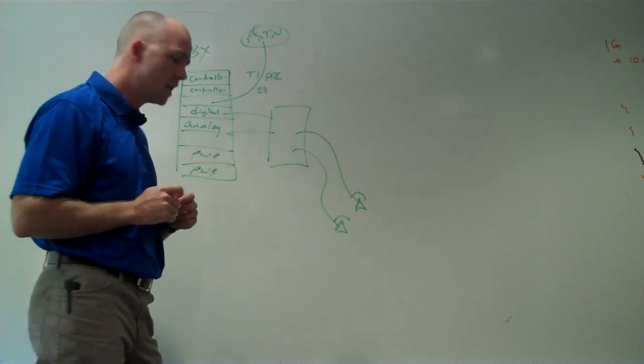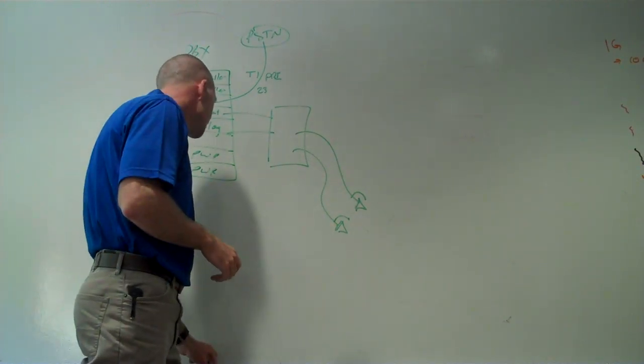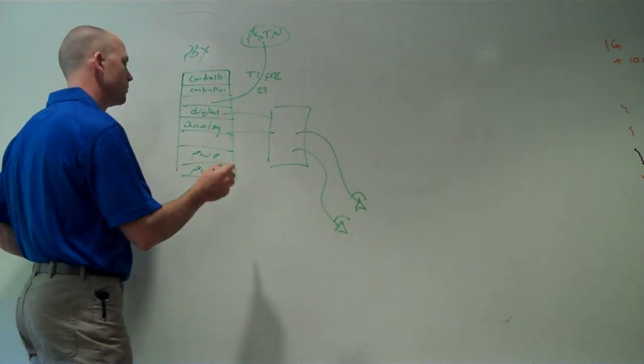So this gives us a private branch exchange system, it connects us to the outside world, it gives everybody DIDs, it lets people call internally, it lets people call out. And then we need to add some functionality onto this, that's above and beyond a typical PBX. So what do we need?